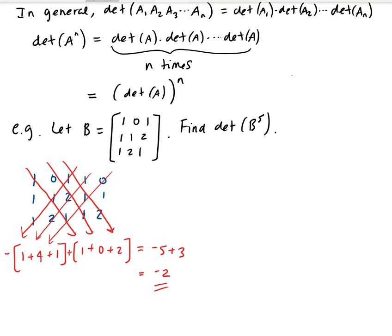So therefore, the determinant of B to the 5th is the same as taking negative 2 raised to the 5th power, and that gives us negative 32. That is the determinant of B to the 5th.